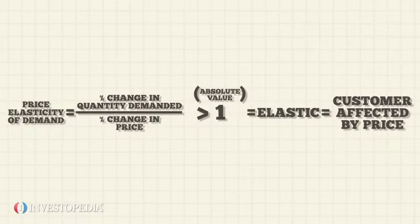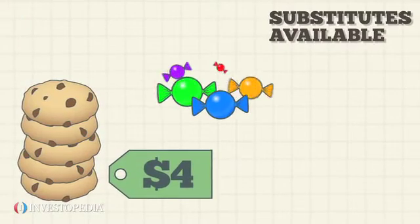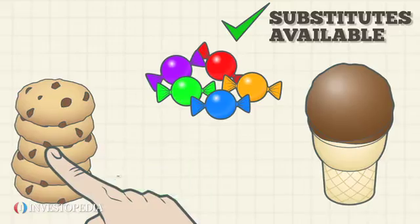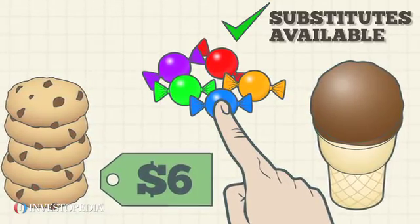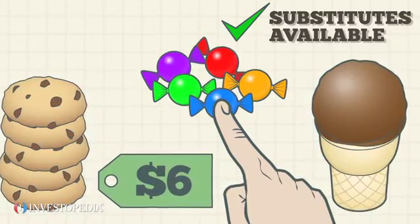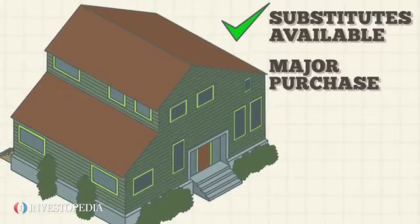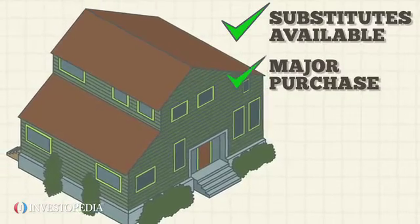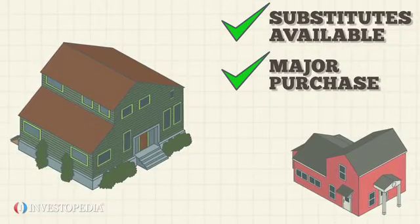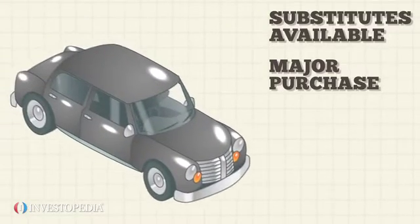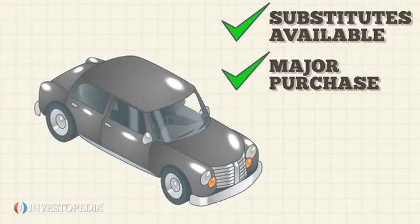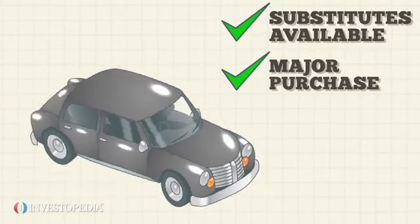Several factors can affect the price elasticity of products. For example, if substitute goods are readily available, the customer will immediately curtail purchases when the price rises. And if the good represents a major part of the buyer's total spending, he or she will be more likely to shop based on price. A new car fits into both of these categories and therefore represents elastic demand.